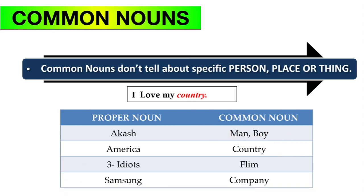I hope you now understand the difference between common nouns and proper nouns. Just remember: common nouns are like general names — they are very common and do not refer to any specific person, place, or thing. Right?